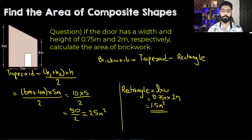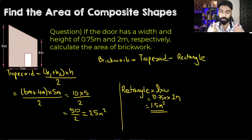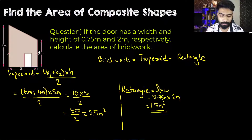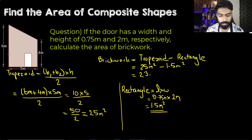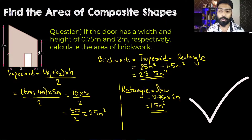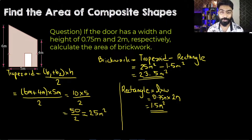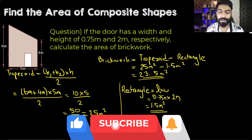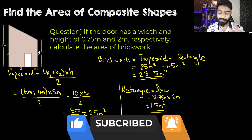If you're enjoying the video, please click the like button and share it with your friends. Now let's finish: the area of the trapezoid is 25 meter squared minus 1.5 meter squared, which equals 23.5 meter squared. That is the area of the brickwork. I hope you enjoyed this video — don't forget to like and subscribe so you don't miss future maths videos. Until next time, have a nice day.